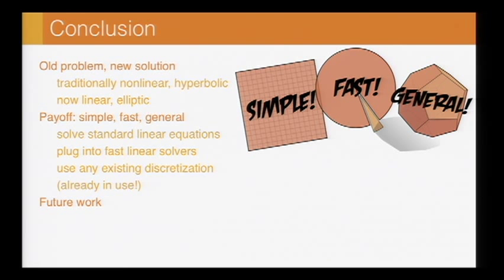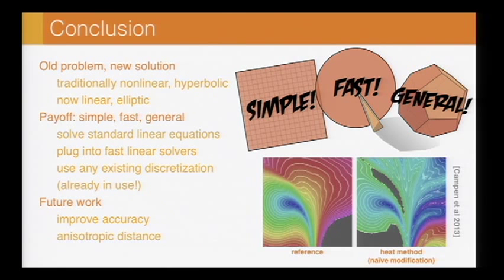There's still a couple things we'd like to do in the future. For one thing, we have some tricks up our sleeve that may help us improve the accuracy of the solution. And another thing is to look at anisotropic distance calculations. So just recently at SGP, I saw a paper by Campen and colleagues where they made a naive modification to the heat method, just basically changing the edge lengths and showed that that doesn't actually give you very nice results for anisotropic distance. So now we're working on how do you really solve this problem in a principled way but still take advantage of these nice features like prefactorization.